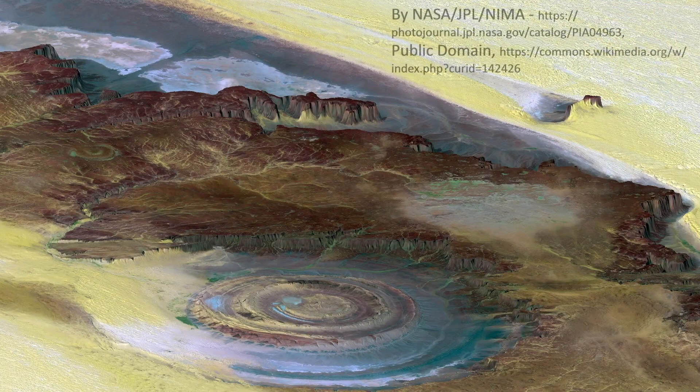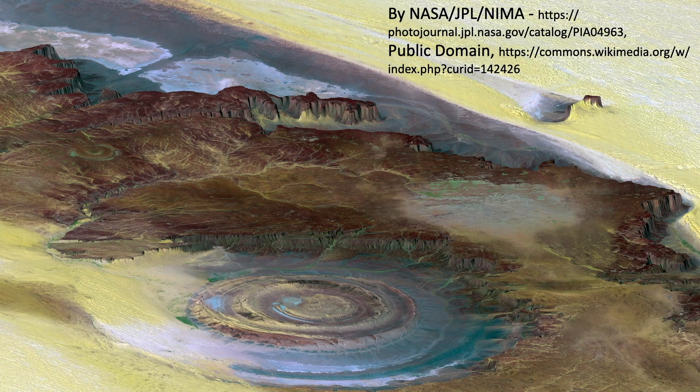Also according to the Wikipedia article, the Richat Structure is the location of exceptional accumulations of Acheulean — that's proto-human — artifacts. The article goes on: artifacts are found, typically redeposited, deflated, or both, in late Pleistocene to early Holocene gravelly mud, muddy gravel, clayey sand, and silty sand.